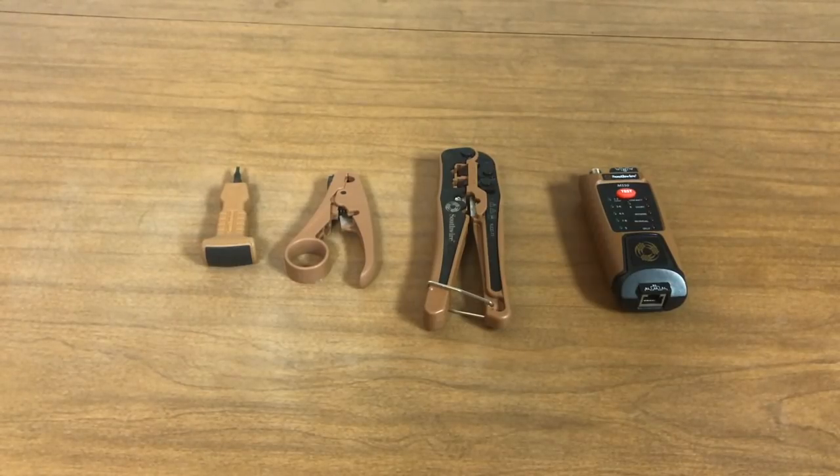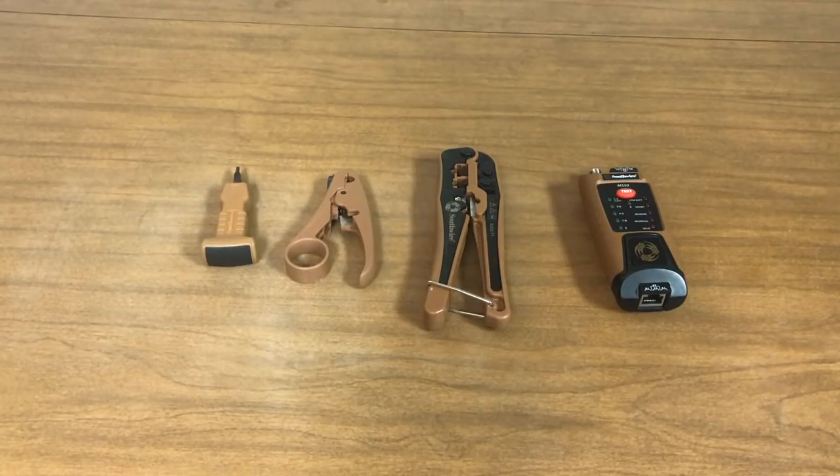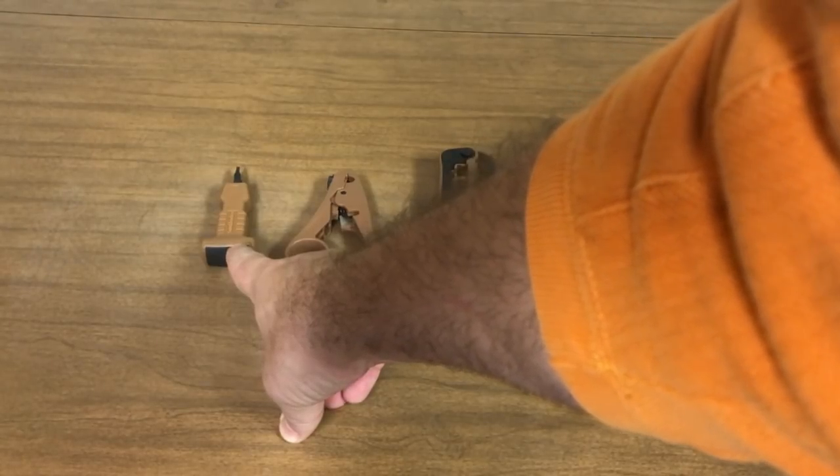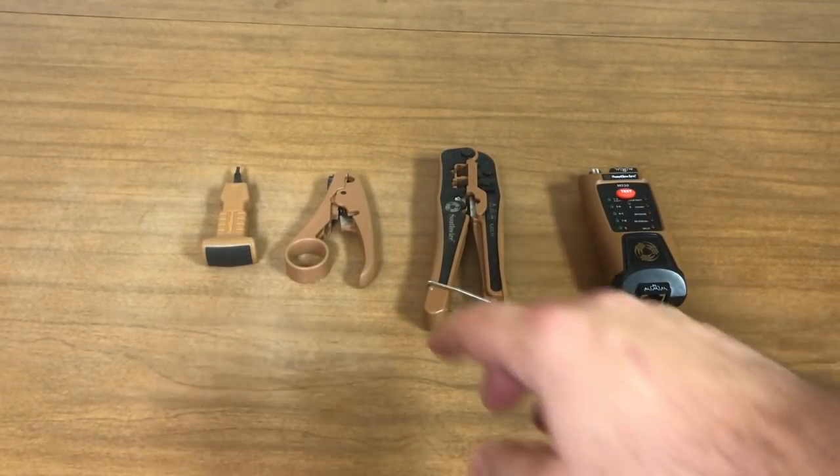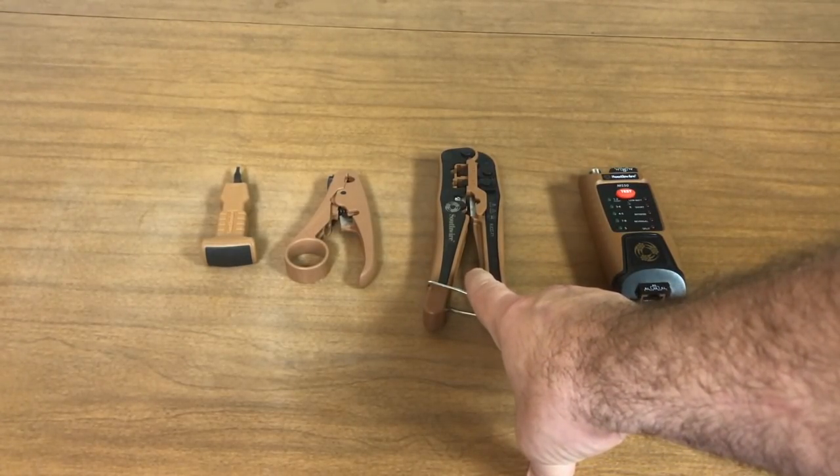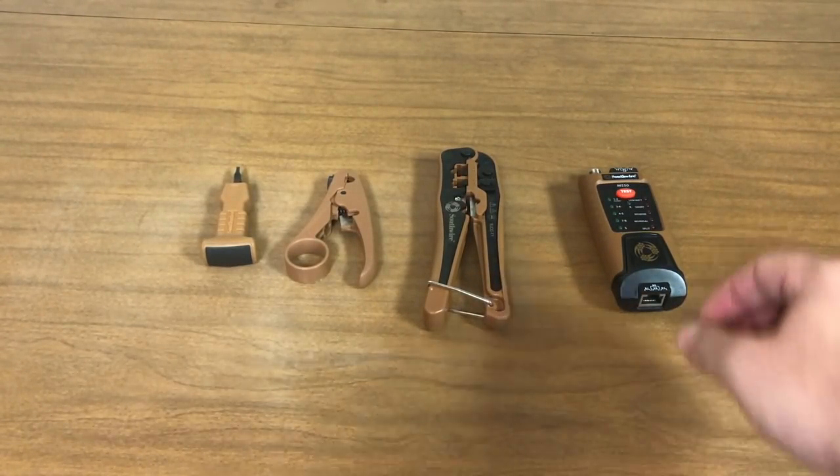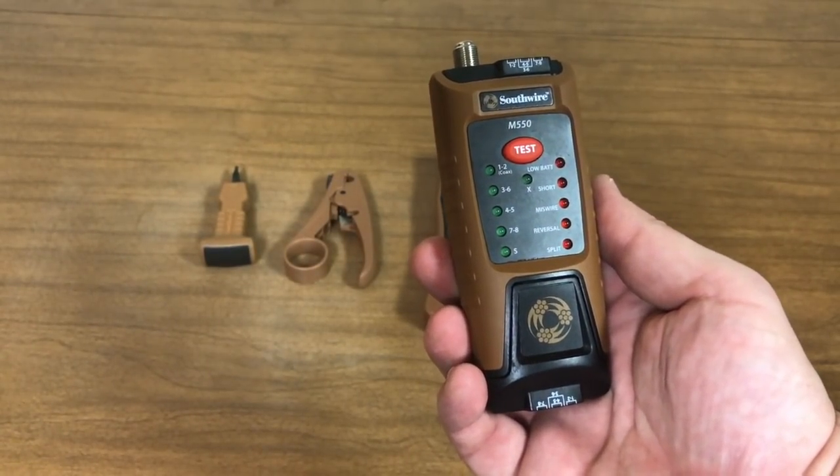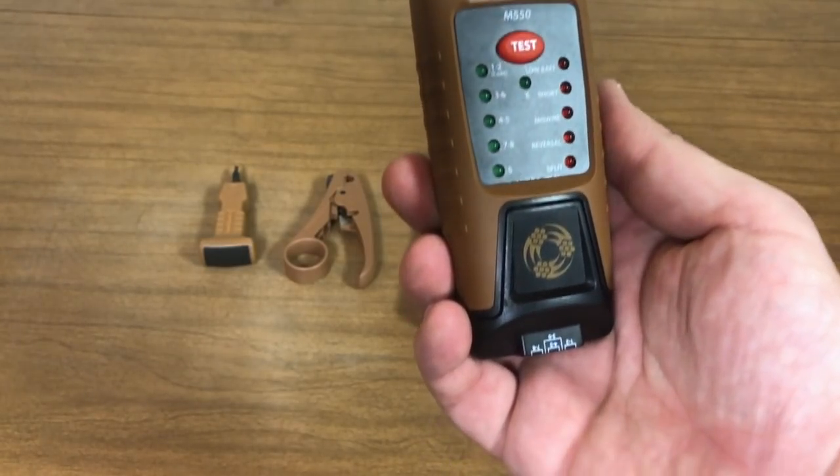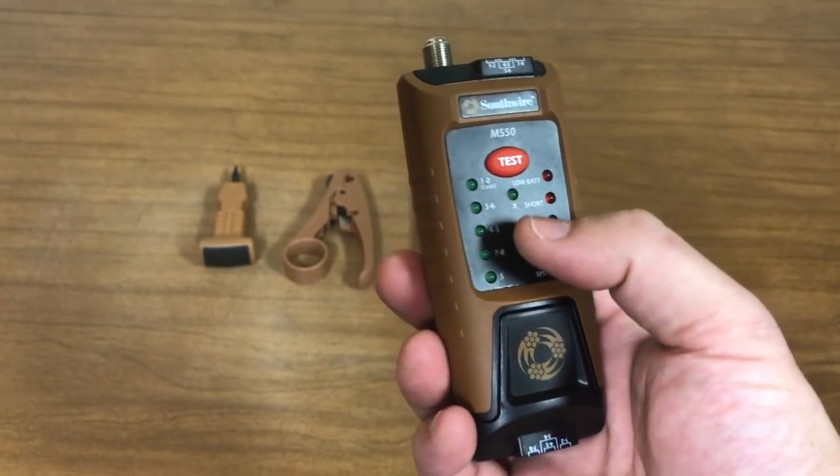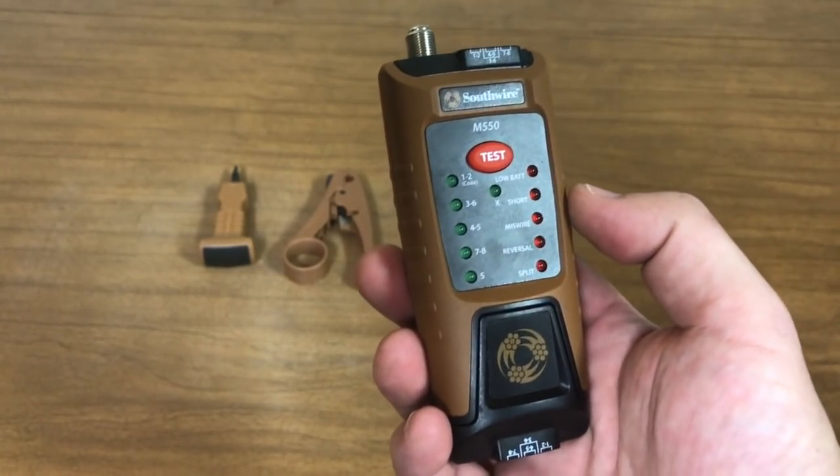So now let's talk about some of the tools that you're going to have to have to put in a network. One of the first things you're going to have to have is a punch down tool. You'll have to use that for the keystones, I'll show you how to use that in a minute. A stripper, this is a crimper for the RJ45 connections. And this one you don't have to have, but I can tell you from doing this in my first house, this will save you a lot of time and effort tracking down gremlins. It's a tester to test your lines, I'll show you how to use that too.